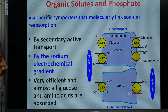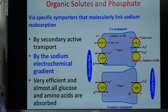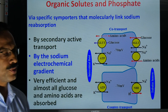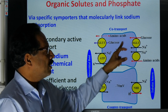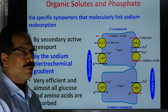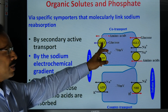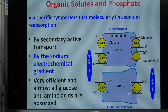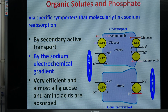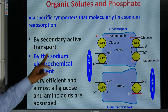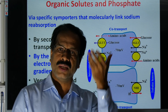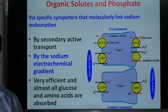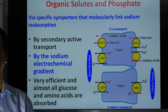The reabsorption of organic solutes including glucose and amino acids occurs through specific symporters, where sodium and glucose move in the same direction, and sodium and amino acids move in the same direction. These are molecularly linked to sodium reabsorption. Sodium reabsorption is an important factor controlling the reabsorption process in the proximal convoluted tubule. All these organic solutes are reabsorbed by secondary active transport mechanism. There are two types of active transport in the kidney tubules: primary active transport and secondary active transport.